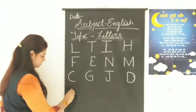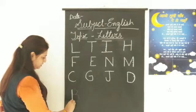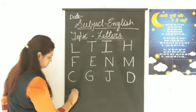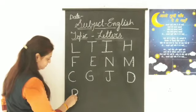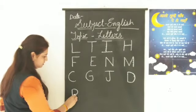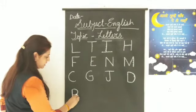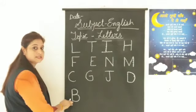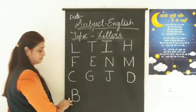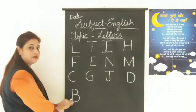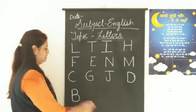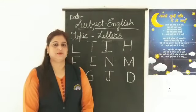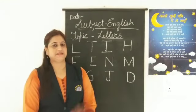B. Standing line, first curve, then again second curve. This is B. B for ball. Thank you children. See you in the next video. Till then take care. Bye bye.